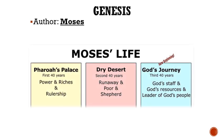According to Deuteronomy 34, verse 7, Moses lived for approximately 120 years. For 40 years he lived in Egypt as the son of Pharaoh's daughter. For another 40 years he lived in the desert of Midian as a shepherd. And the final 40 years of Moses' life were wandering in the Sinai wilderness with the children of Israel. This means that he most likely wrote these books in the last 40 years of his life, around 1445 to 1405 B.C.